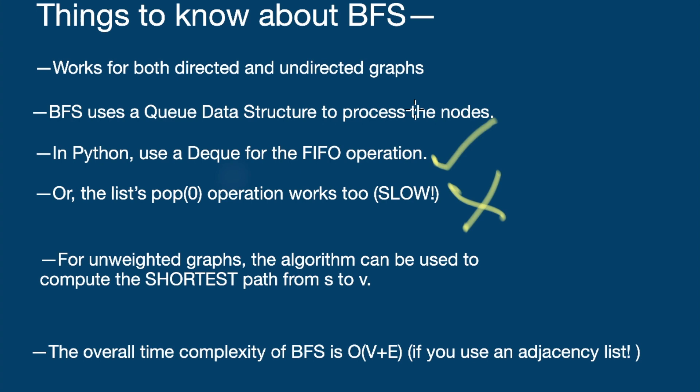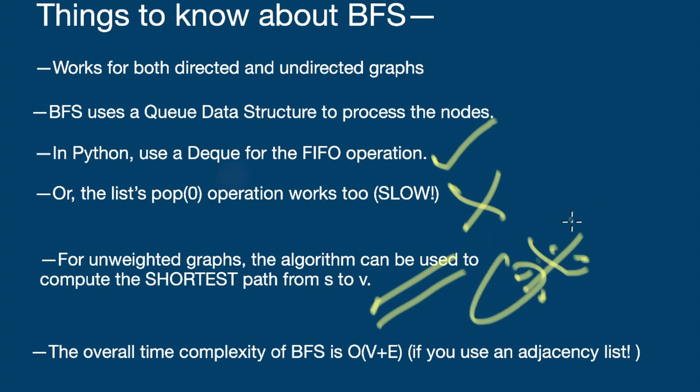For unweighted graphs — and this is the most important takeaway — breadth-first search can be used to compute the shortest path from the source node to the destination node. This is based on the simple premise that BFS always discovers all nodes at a distance of k before visiting nodes at a distance of k plus one. This is the working principle behind BFS and that's why it finds the shortest path for unweighted graphs.